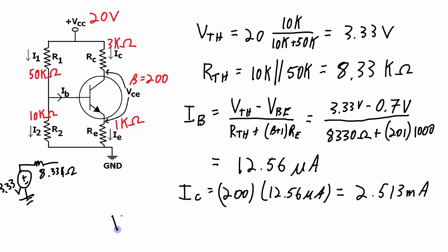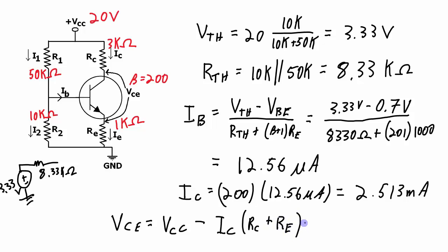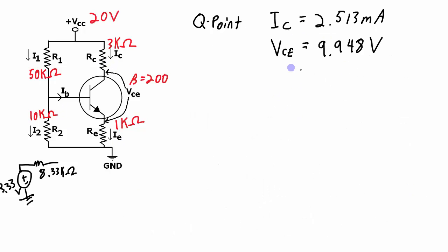The collector-emitter voltage is easy to calculate from the output loop: VCC minus IC times the collector resistance plus the emitter resistance. Plugging the numbers in, I end up with 9.948 volts. So the combination of these two values gives me the operating point — the Q-point — for this transistor circuit: IC equals 2.513 milliamps and VCE equals 9.948 volts.